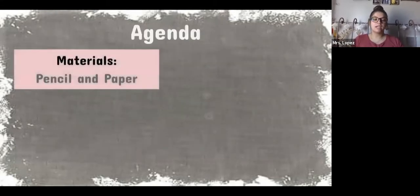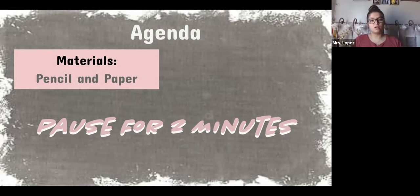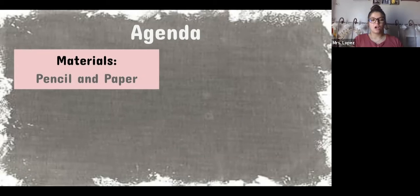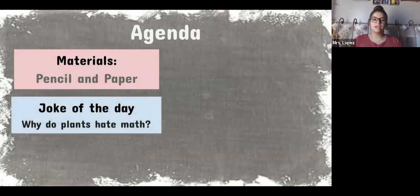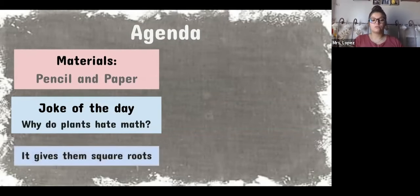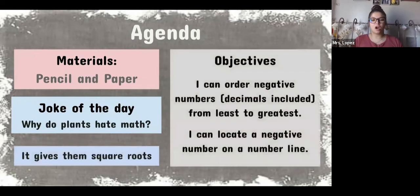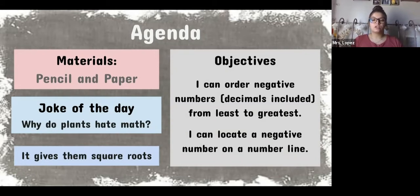Our agenda today: first, get your materials — you need a pencil and paper. Pause the video for two minutes to grab those. We also have a joke of the day: why do plants hate math? Because it gives them square roots! Our objectives are: I can order negative numbers, decimals included, from least to greatest, and I can locate a negative number on a number line. Repeat those objectives, then we'll get started.